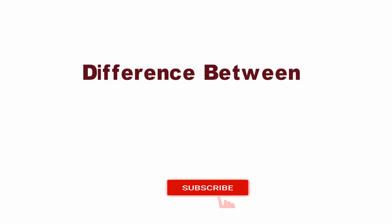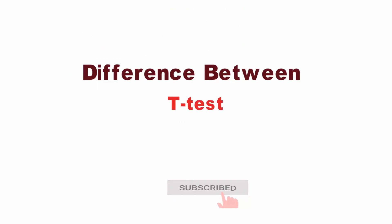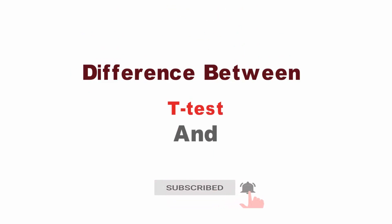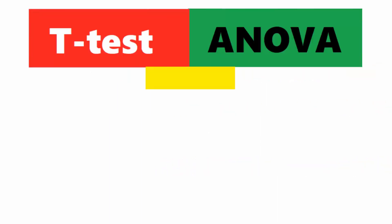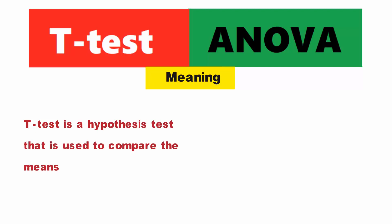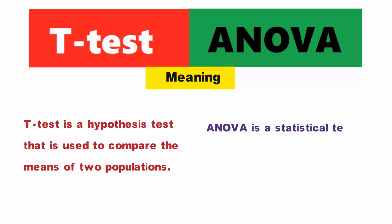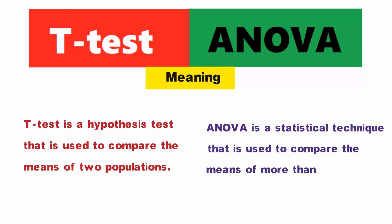Now going to the main topic. The significant differences between t-test and ANOVA are discussed in detail in the following points. 1. Meaning: A hypothesis test that is used to compare the means of two populations is called t-test. A statistical technique that is used to compare the means of more than two populations is known as analysis of variance, or ANOVA.